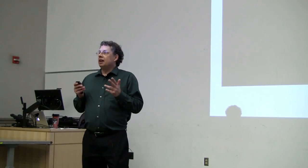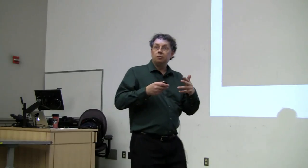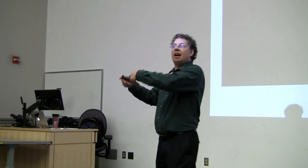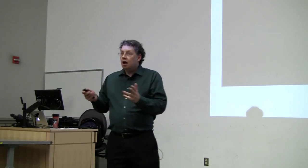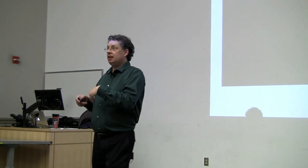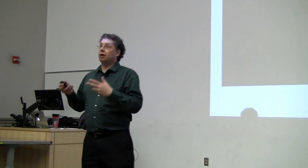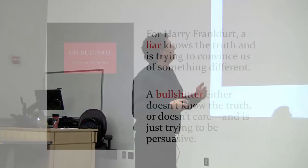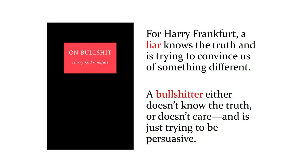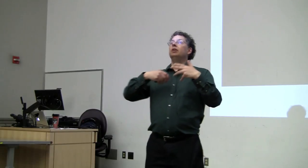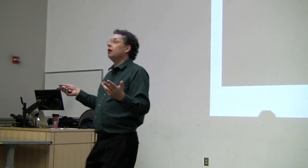We've looked at a bunch of examples where data graphics have either been designed to be misleading or they look like they have — maybe they've just come out that way by accident. Let's take a lighter diversion and spend some time looking at how pure Frankfurtian bullshit makes it into data visualization. For Frankfurt, a liar knows the truth and is trying to convince us of something different. A bullshitter either doesn't know the truth or just doesn't care — they're trying to be persuasive, to impress you, to attract your attention. And data graphics can do all of those things in ways that obstruct their ability to present information without necessarily deliberately trying to fool you.